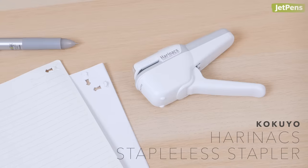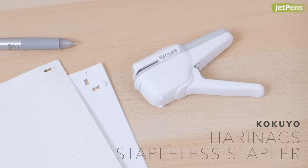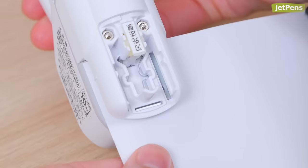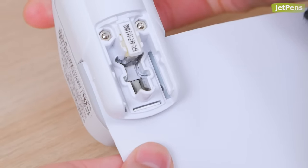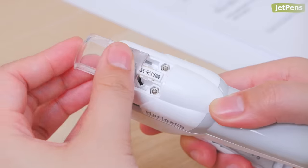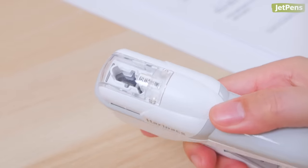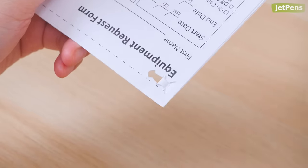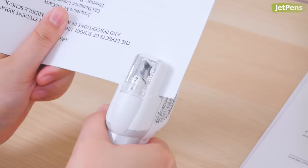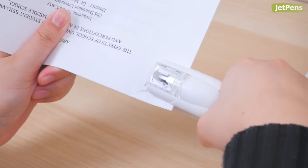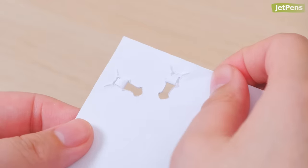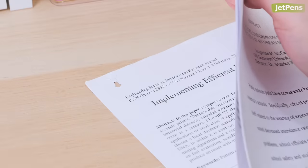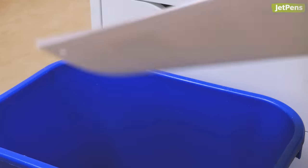The Kokyo Harinax stapler doesn't actually use any staples. Made with recycled ABS plastic, it punches out and tucks a flap through a slit, stitching sheets securely together. A clear window lets you see exactly where you're stapling, so you won't accidentally staple over a line of text. For an extra strong hold, staple the paper twice at the corner to form a 90 degree angle. When it's time to toss documents, you don't have to think about removing any staples before recycling, making it even more eco-friendly.